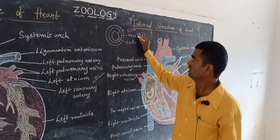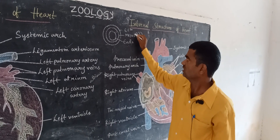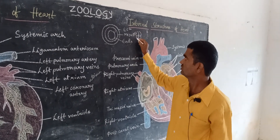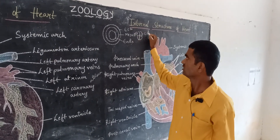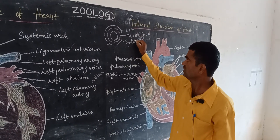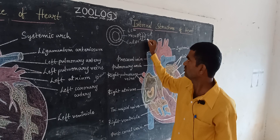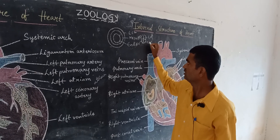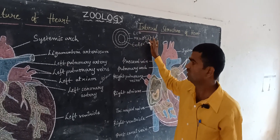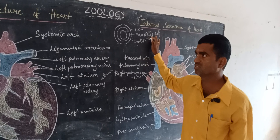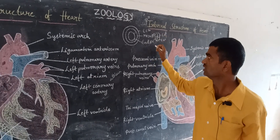It is called the right atrium and left atrium, and there is the right ventricle and left ventricle. Likewise, the four-chambered heart is present in human beings.